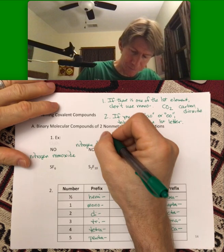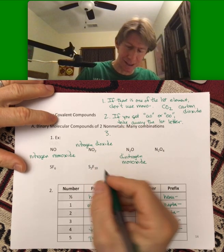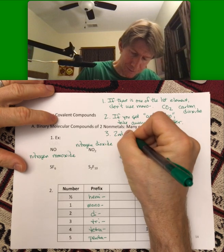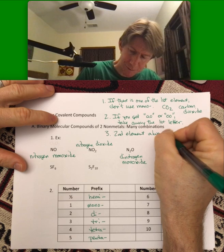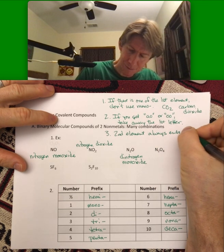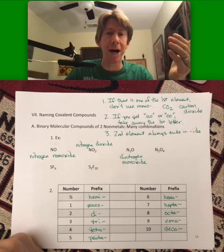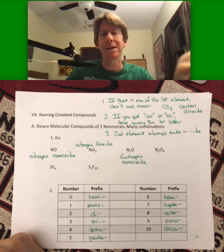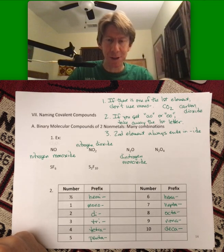The third rule is that the second element always ends in IDE, which is similar to the monatomic ions. And that can get confusing.